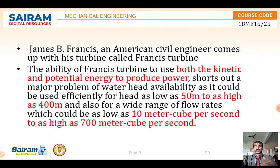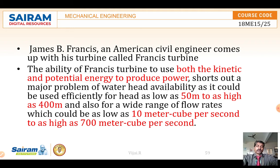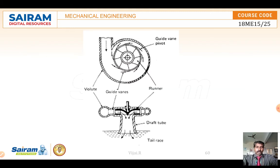This turbine can effectively run for a pressure head of 15 meters to 400 meters. The flow rate is 10 cubic meters per second to 700 cubic meters per second.